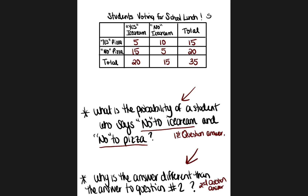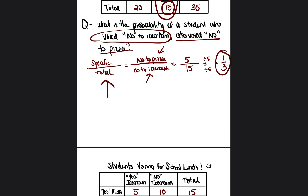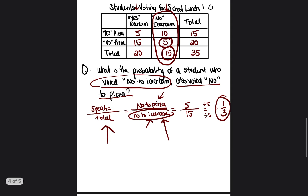I hope this video has helped and encouraged you for your Accuplacer exam probability portion. It doesn't have to be confusing — just remember: specific over total. Circle either the column or the row, find the total, find the specific value they're asking for, reduce the fraction, and you have your final probability. There will be more videos on probability specifically for the TSI exam as well, so stay tuned. Have a great day!